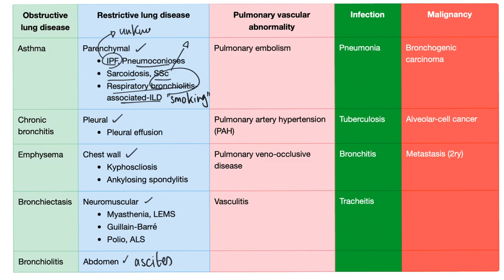Pleural causes include pleural effusion and pleural thickening. Chest wall causes: kyphosis, scoliosis, kyphoscoliosis, ankylosing spondylitis, pectus excavatum, pectus carinatum, etc. Neuromuscular causes: myasthenia gravis, Lambert-Eaton myasthenic syndrome, Guillain-Barré, post-polio syndrome, amyotrophic lateral sclerosis also known as Lou Gehrig's disease. Abdominal causes include ascites and organomegaly.